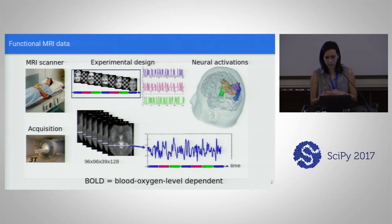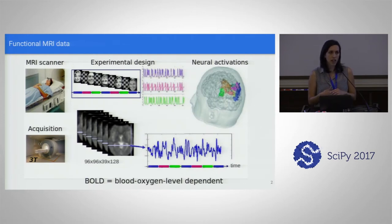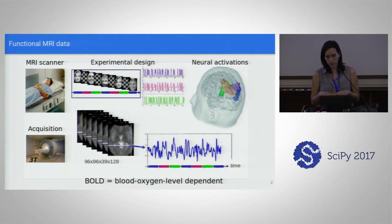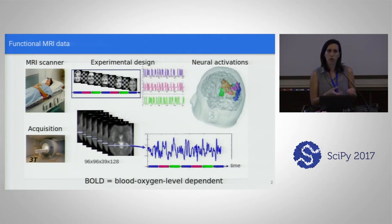One kind of functional MRI signal is the BOLD signal — blood oxygen level dependent — and it's very commonly used because it's non-invasive. We don't need to inject any kind of contrast agent. What we see with the BOLD signal is where blood goes after brain activity happens, because it uses hemoglobin as a natural tracer.